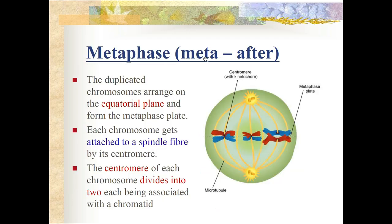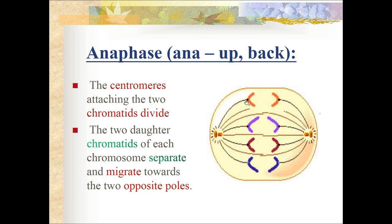Next is metaphase - 'meta' means after. The duplicated chromosomes arrange on the equatorial plane, forming a metaphase plate. Each chromosome gets attached to spindle fibers by its centromere, and the centromere of each chromosome divides into two, each being associated with a chromatid. After attachment of the spindle fiber to the centromere, it divides into two, and the two daughter chromatids of each chromosome separate and migrate towards the opposite poles.